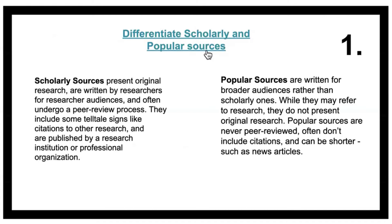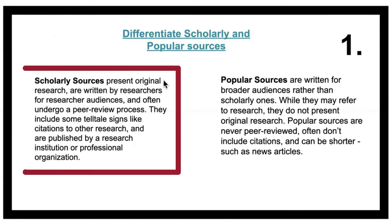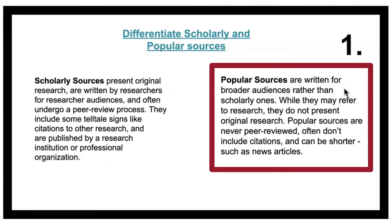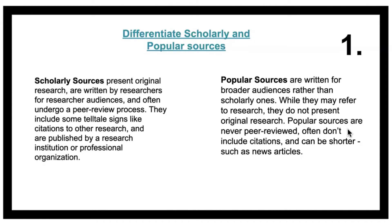Now let's differentiate scholarly and popular sources. Scholarly sources present original research, are written by researchers or for researcher audiences, and often undergo a peer-review process. They include telltale signs like citations to other research and are published by a research institution or professional organization. Popular sources are written for broader audiences rather than scholarly ones. While they may refer to research, they do not present original research. Popular sources are never peer-reviewed.